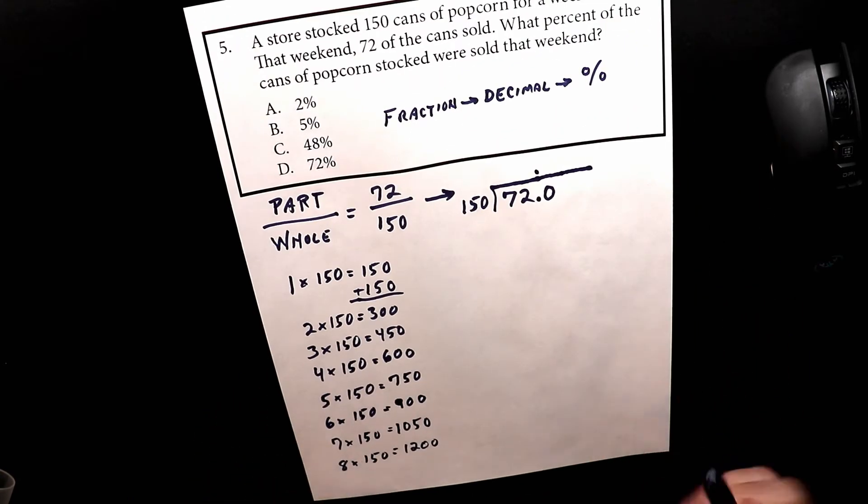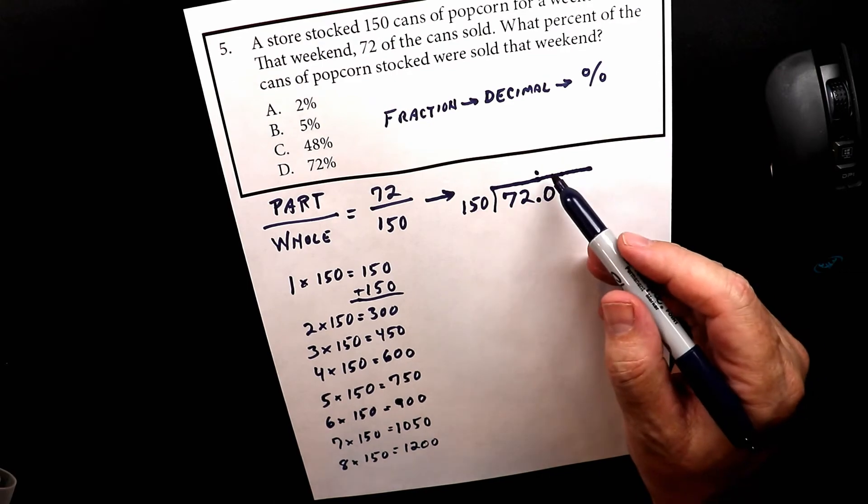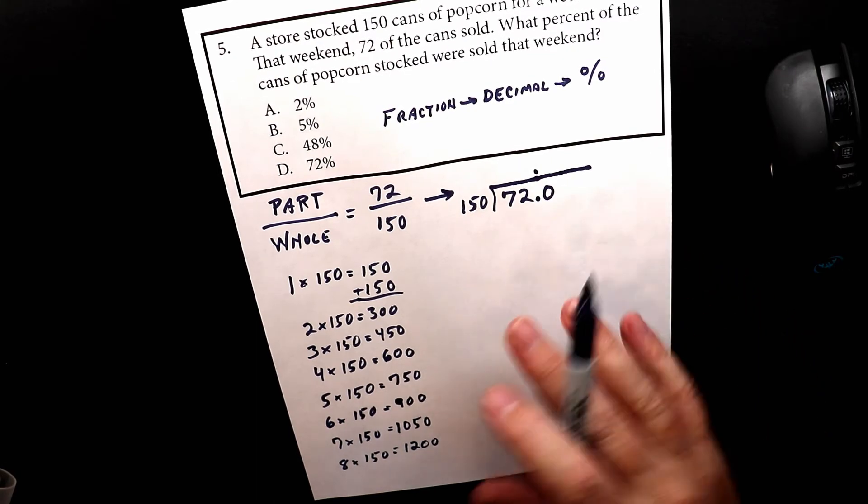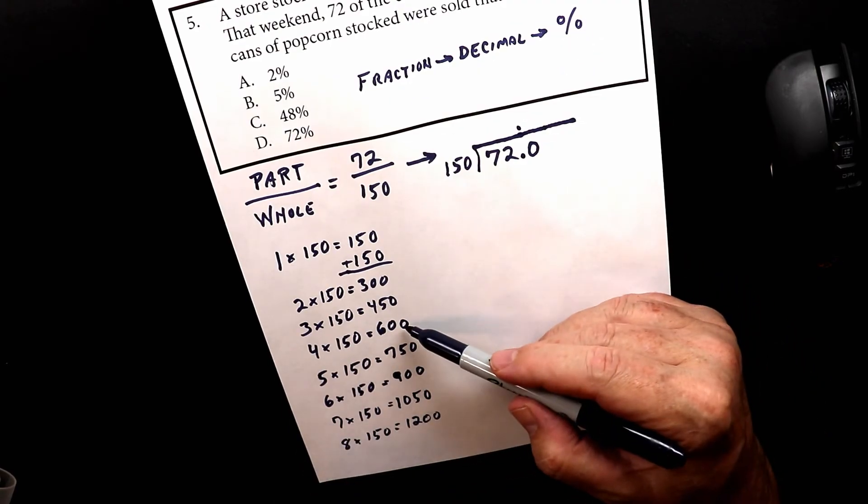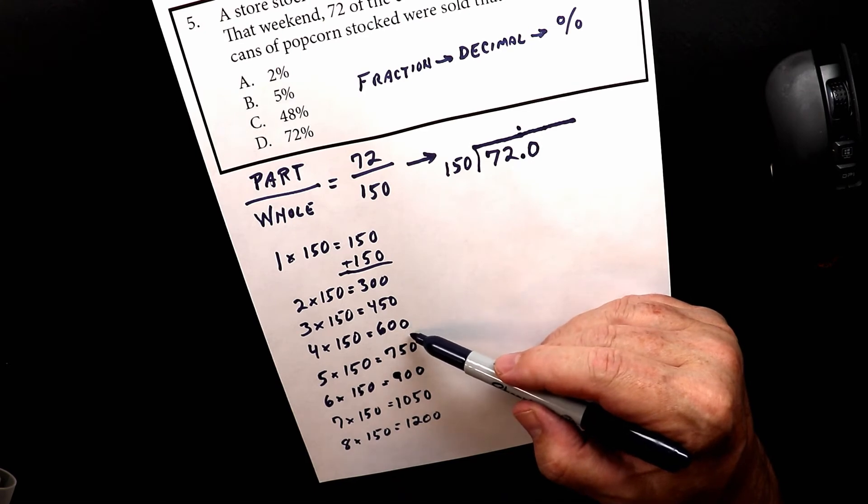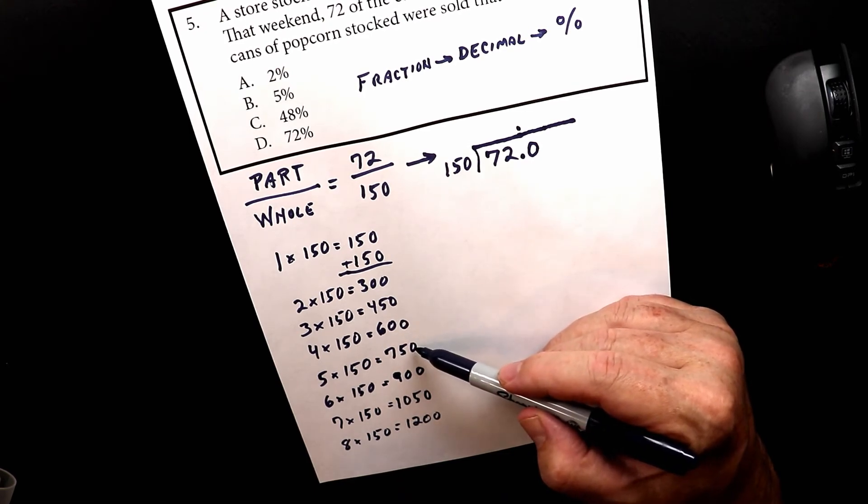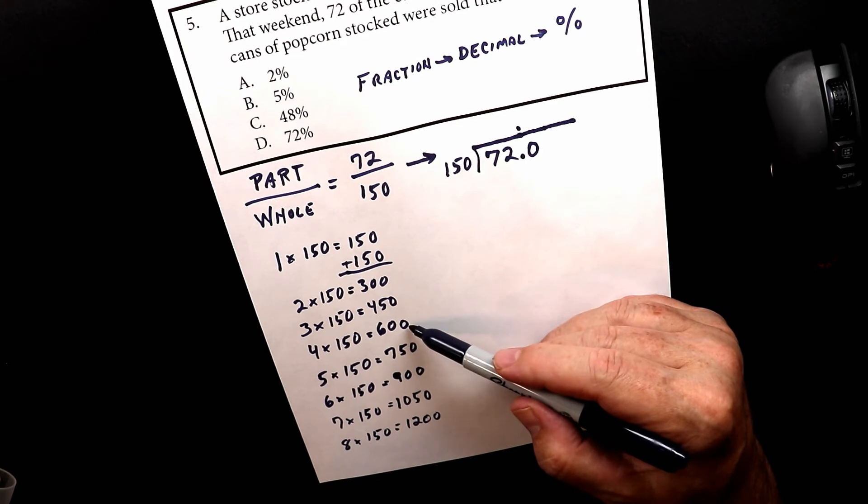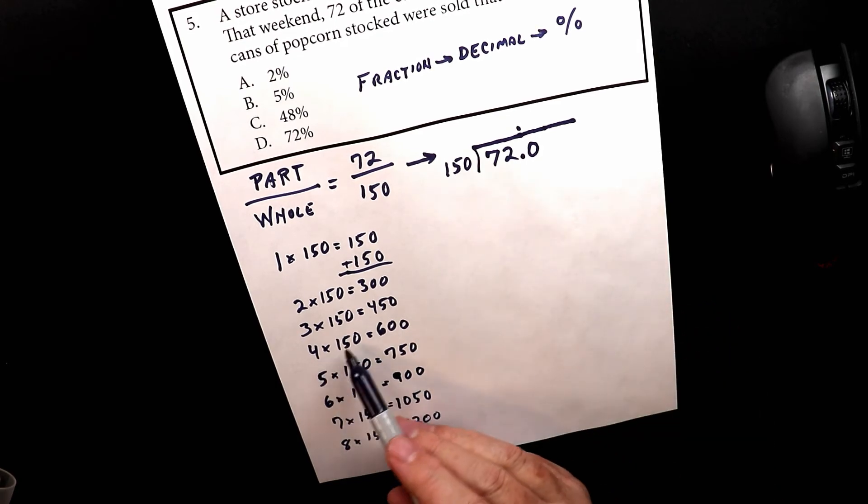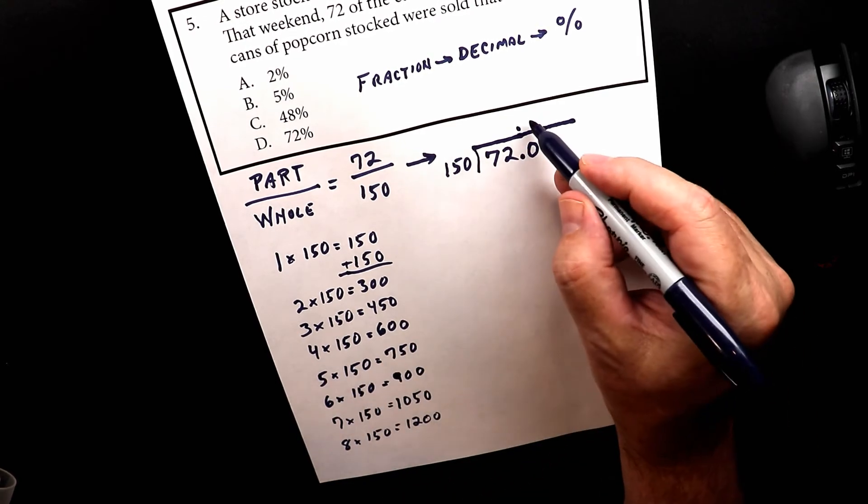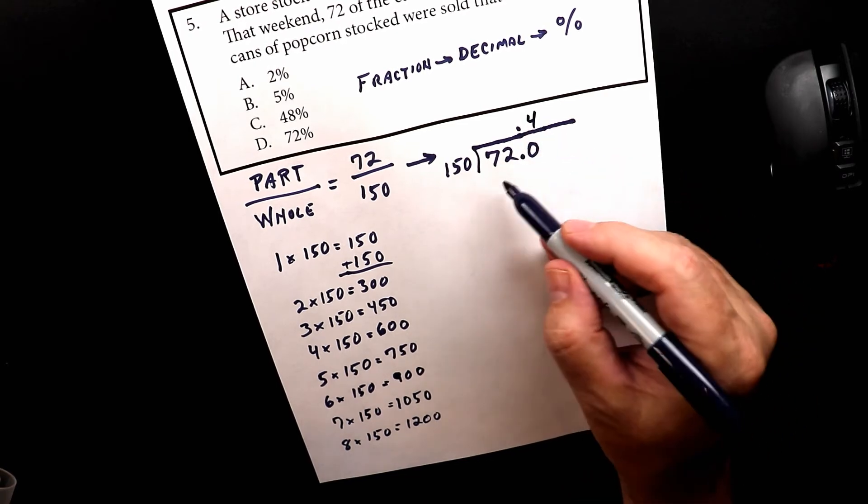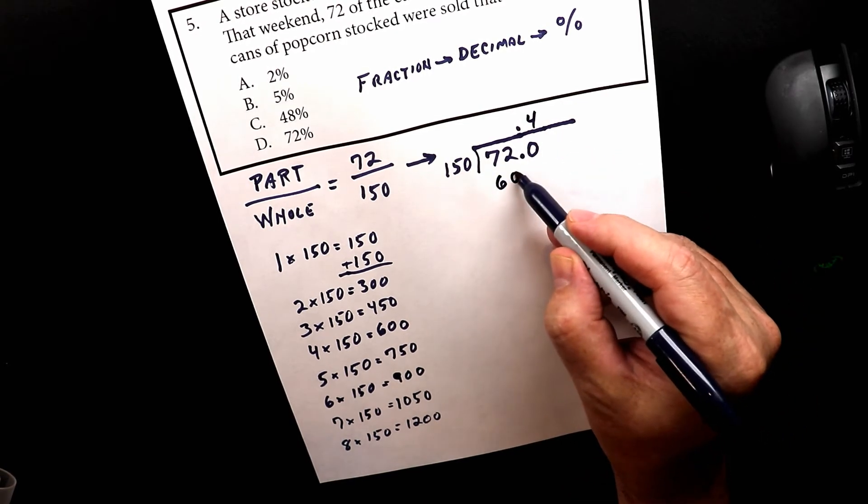So watch what I'll do over here. I look over here and I see 720. I'm looking for a number over here that isn't bigger than 720. So this is too big. So I know that the first one is 600. So 4×150 is 600. So I put the 4 there, and then I put 600 here.